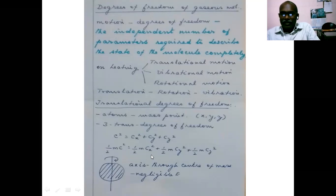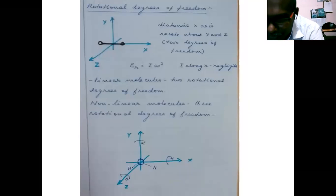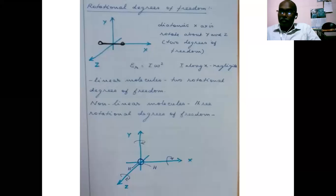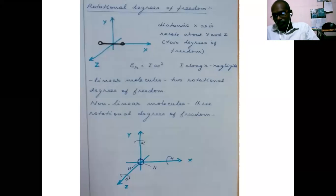The rotation of an atom about the axis which passes through the center of mass needs very little — almost negligible — energy. Therefore, for a monoatomic gas, there is no rotational degree of freedom; it has only translational degrees of freedom. Hence, a monoatomic gas has only three degrees of freedom, and those three degrees of freedom are three translational degrees of freedom: translational motion along x, y, and z directions.